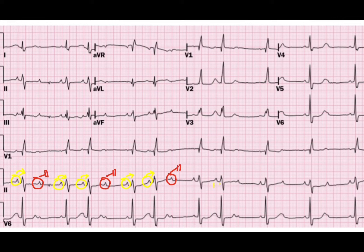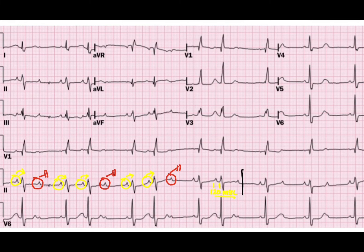But which one? The duration of the PR interval is normal — around 120 milliseconds — so it is not first degree heart block. The PR interval is constant, so it is not second degree type 1 heart block, where the PR interval keeps prolonging until we see a dropped beat. It is second degree type 2 heart block, where the P waves conduct normally through the AV node but then all of a sudden there is a block without affecting the PR interval.